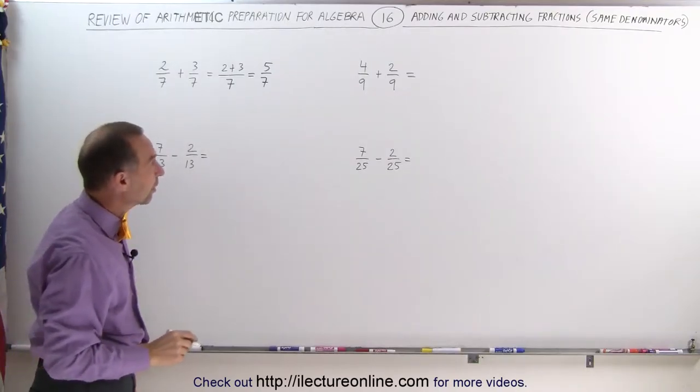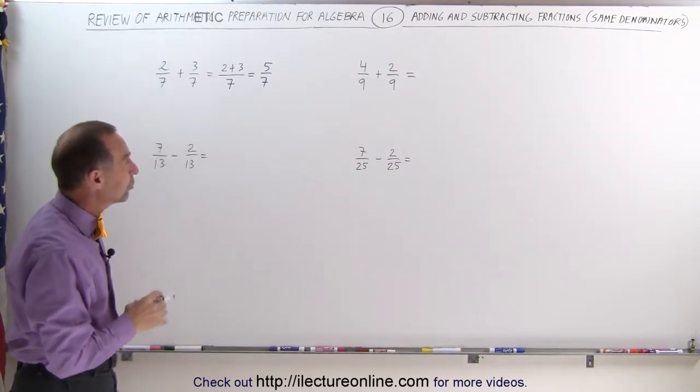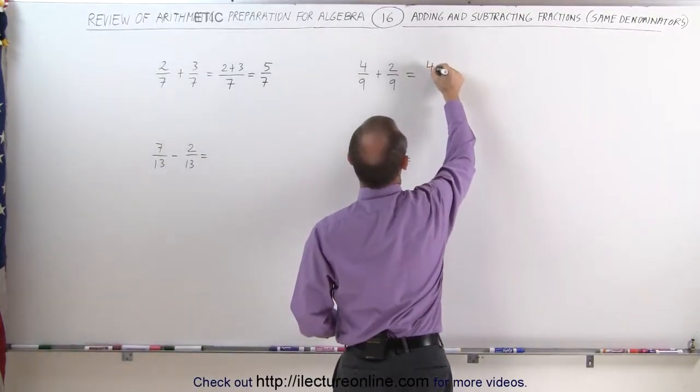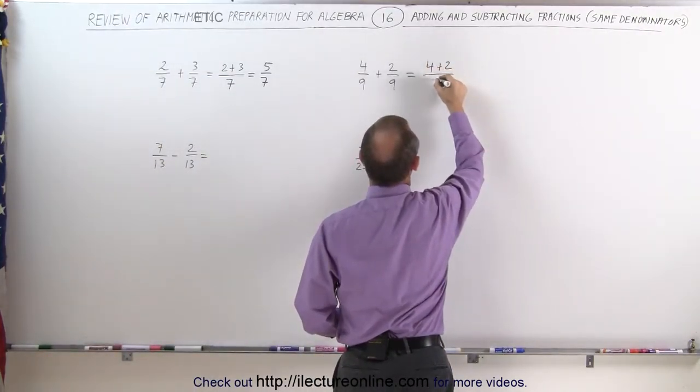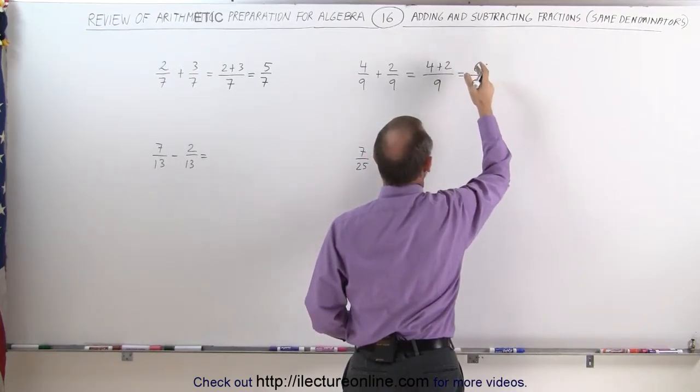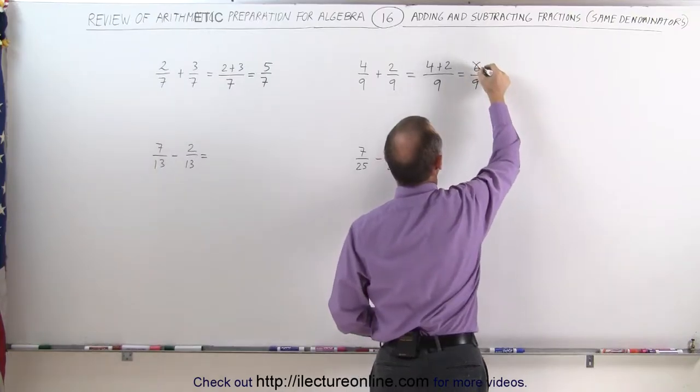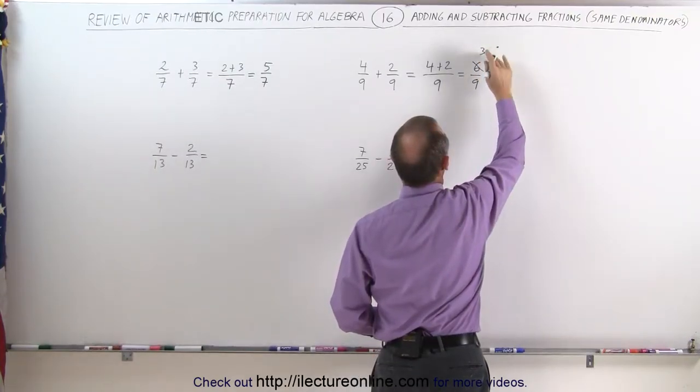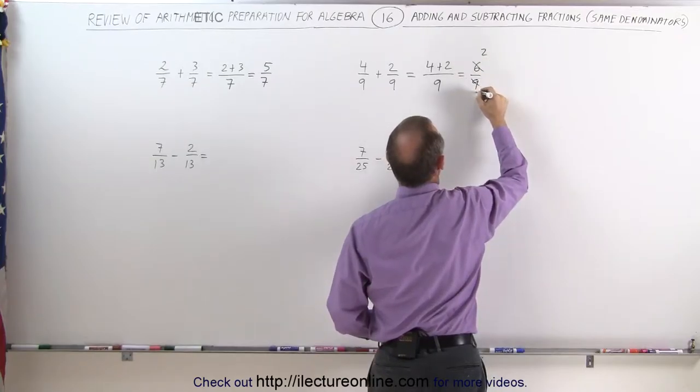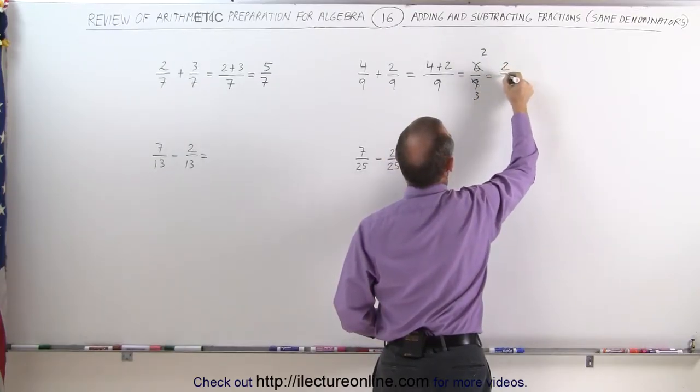Same over there, notice that 4 ninths plus 2 ninths, they both have the same denominators, this then becomes 4 plus 2 over a common denominator of 9, which is equal to 6 divided by 9. And now notice that they can both be divided by 3, 6 divided by 3 is 2, 9 divided by 3 is 3, and this becomes 2 thirds.